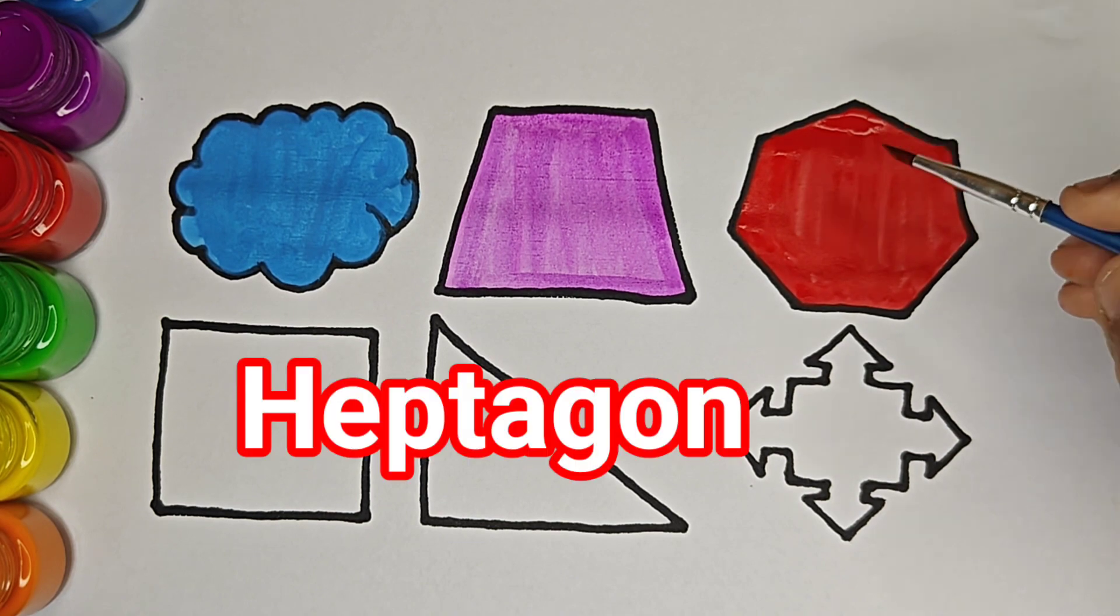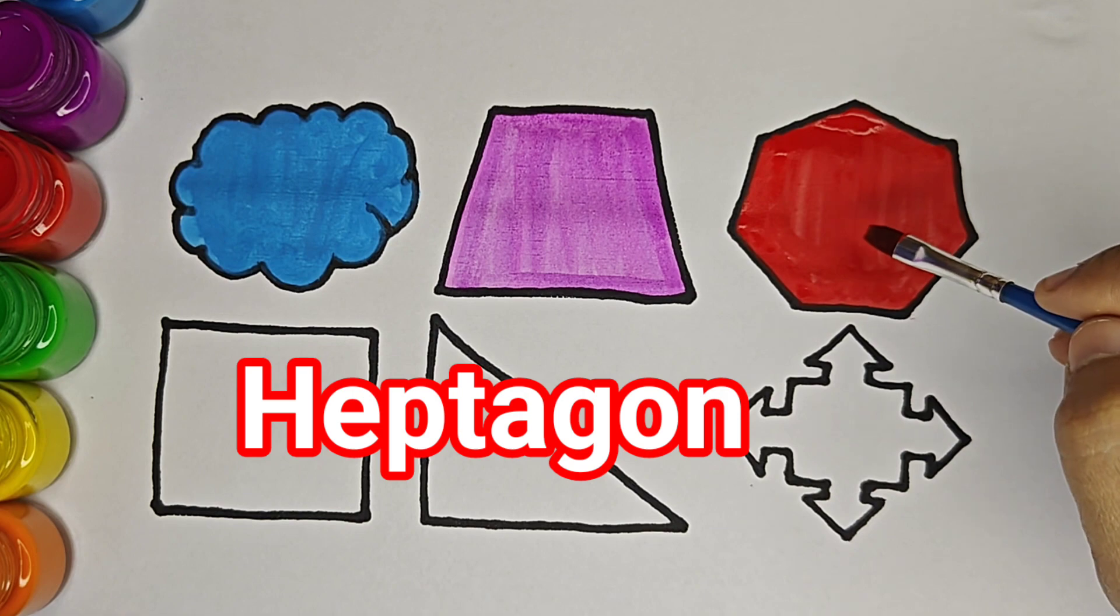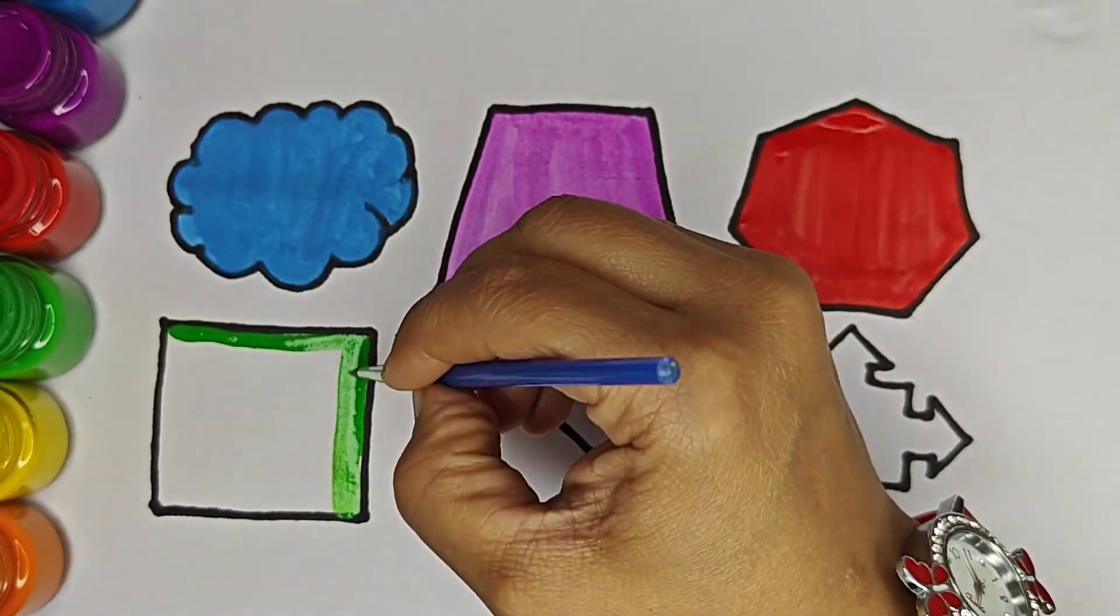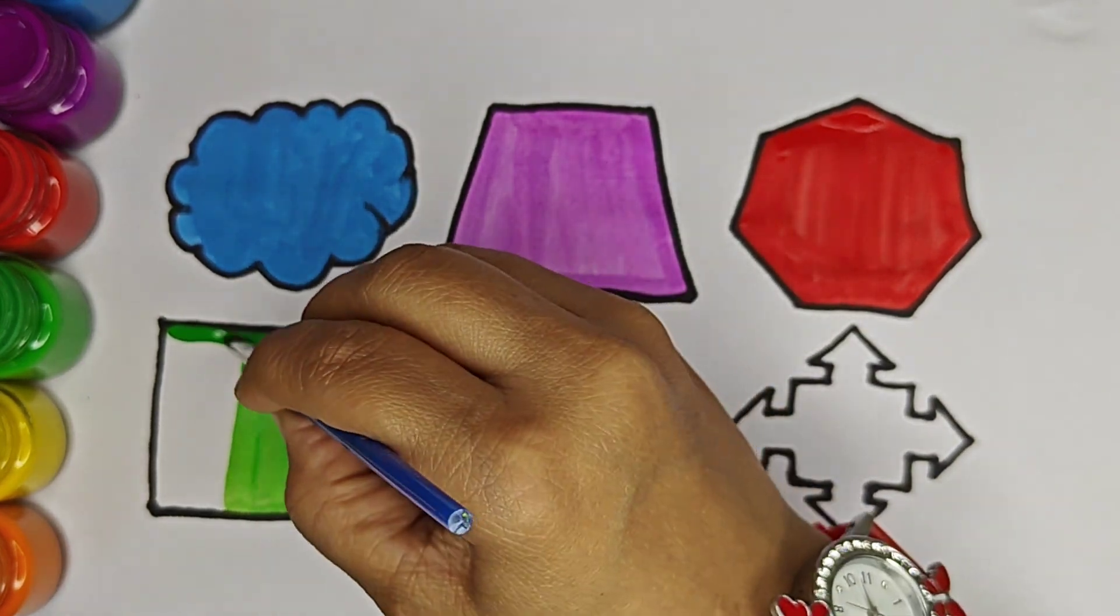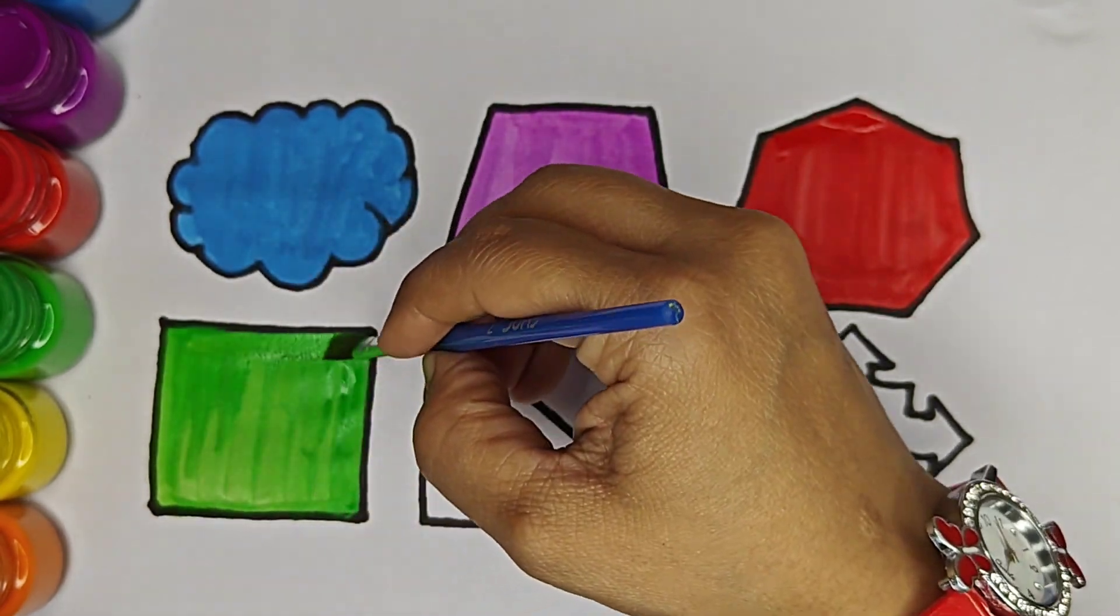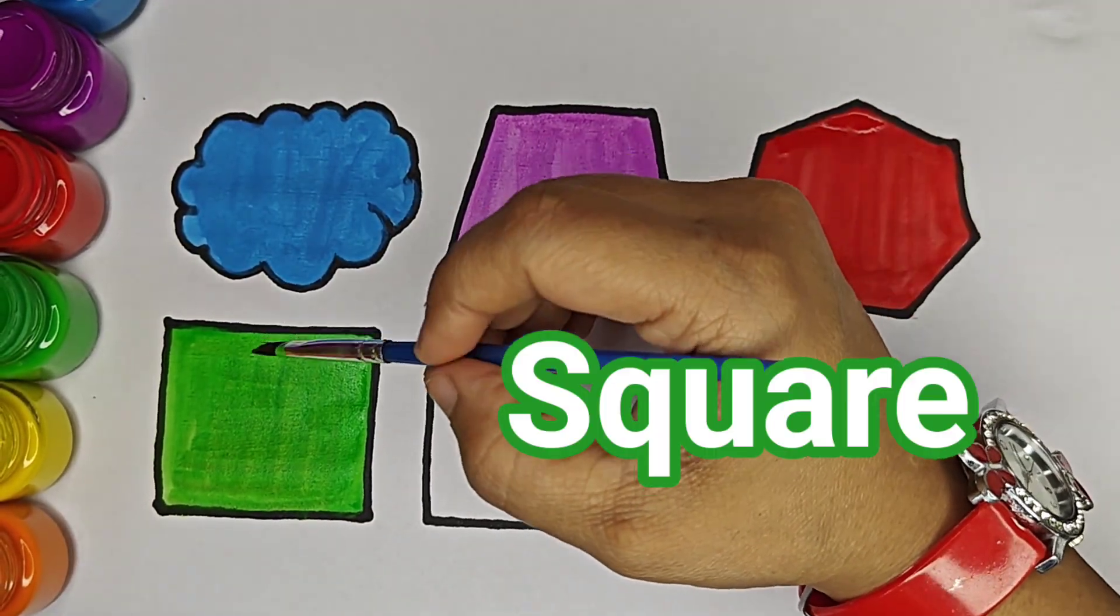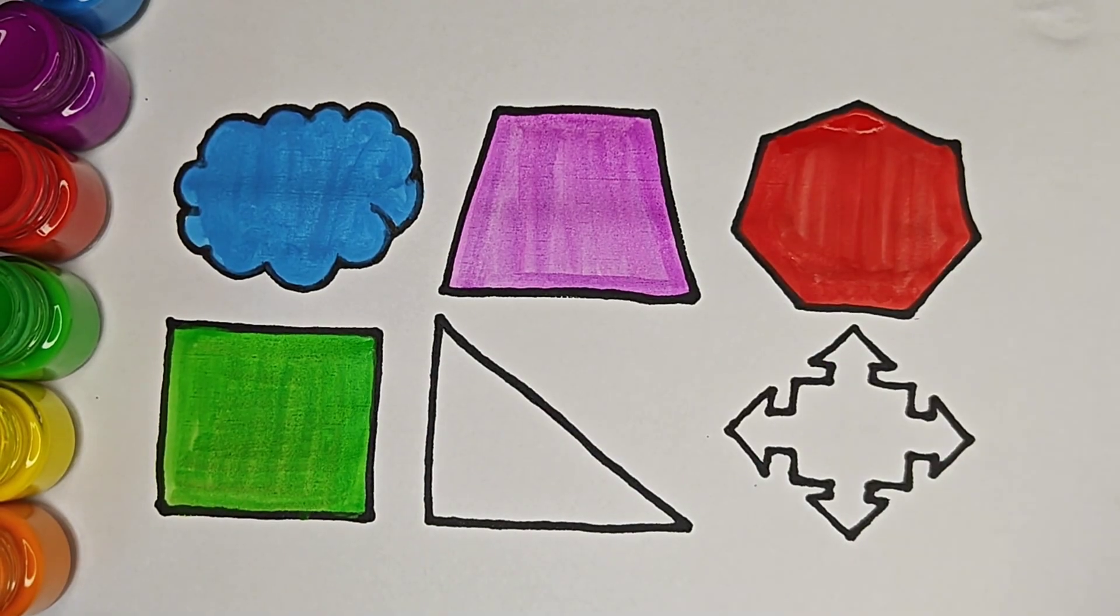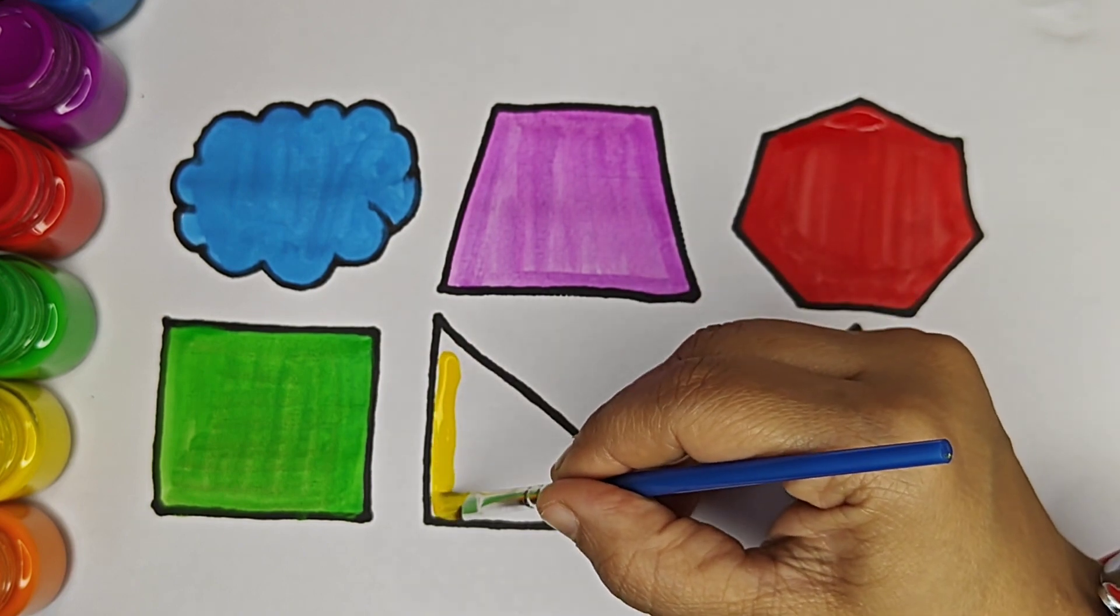Green color. This shape is heptagon. It has seven sides: one, two, three, four, five, six, seven. Heptagon, green color. Yellow color. This shape is square. It has four sides: one, two, three, four. All sides are equal. Yellow color.